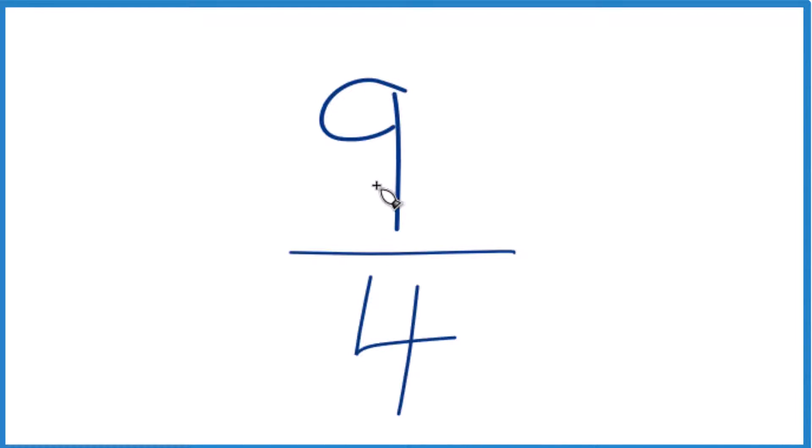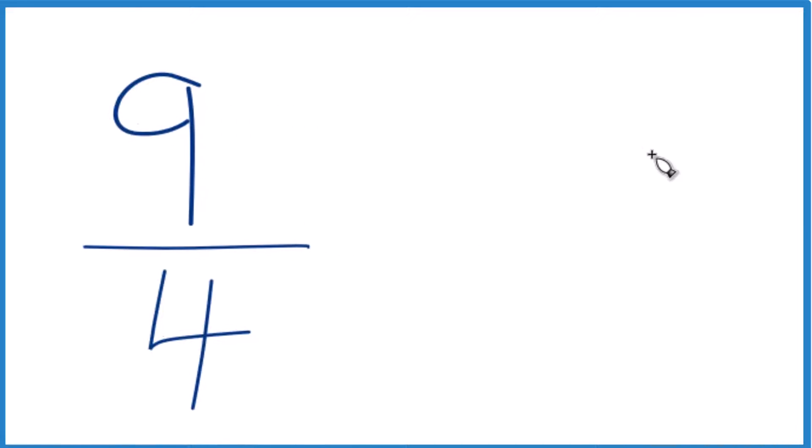In fact, four goes into nine two times. Four times two is eight, so we should have a number around two. You could put this in a calculator, nine divided by four, that would give you your decimal. Or we could just divide it longhand. We have nine and we want to know how many times four goes into nine.